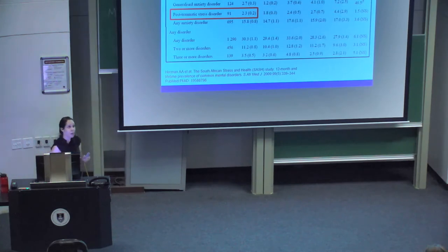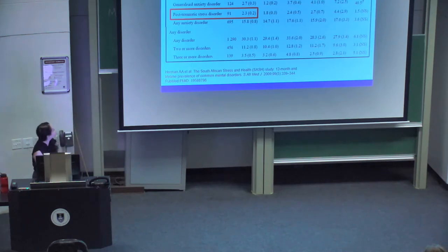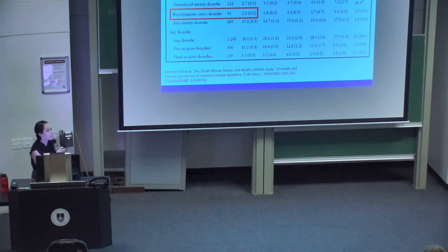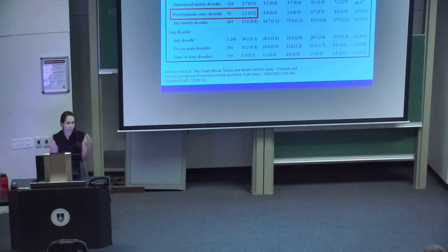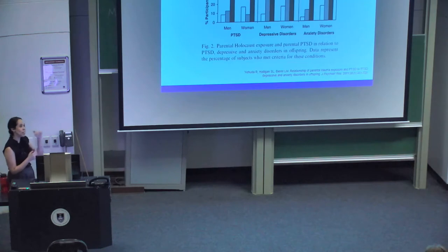From the SASH study, the prevalence of PTSD across all groups was 2.3%. This is interesting because there seemed to be a real discrepancy between the huge burden of trauma exposure in South Africa and the relatively low prevalence of developing PTSD — for example, agoraphobia without panic sits at 9.8% and any anxiety disorder at almost 16%. This discrepancy was a key motivator for renewed focus on the epidemiology and underlying etiology of PTSD.